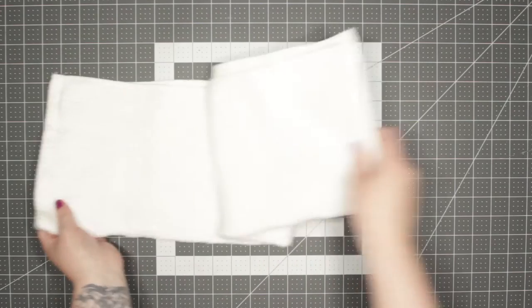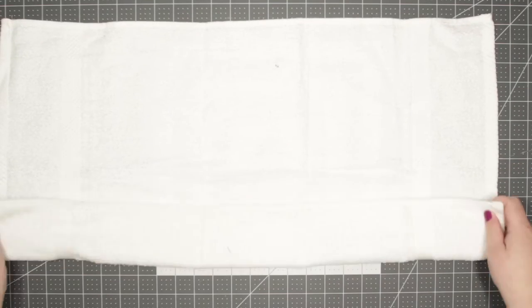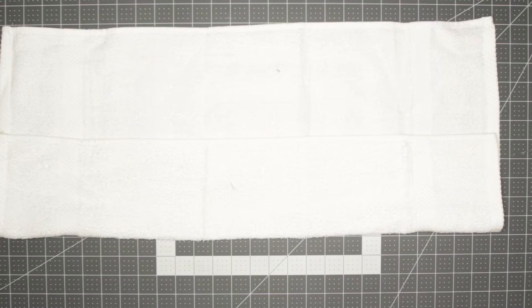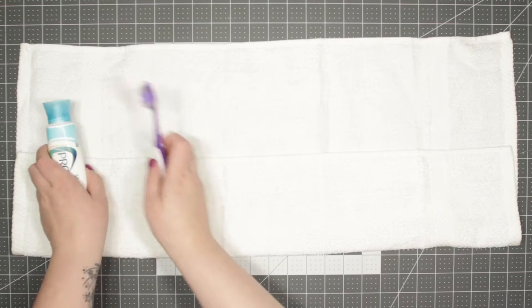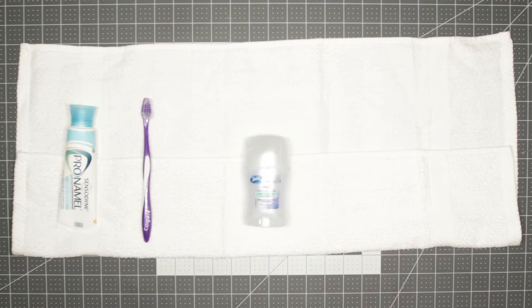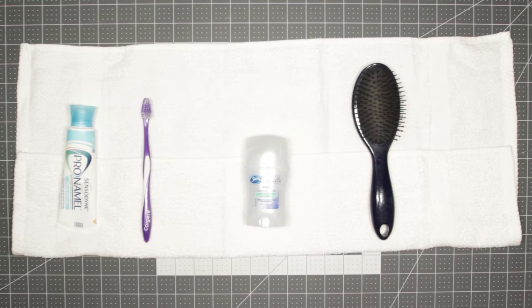To get started, lay out your hand towel and then fold over the bottom so you have a nice little pocket for the stuff that you're going to be holding in it. You're going to take everything that you want to hold in it and lay it out, and then mark the spaces for each of those things.